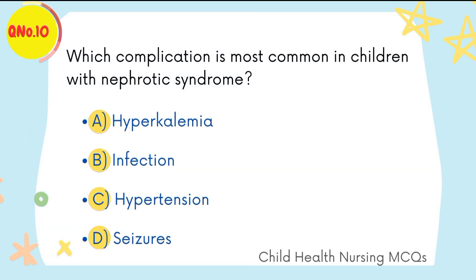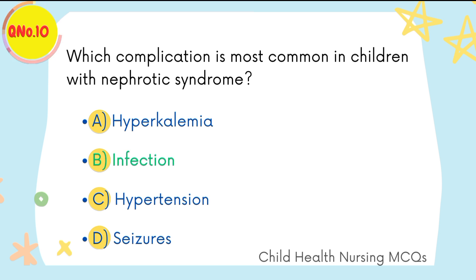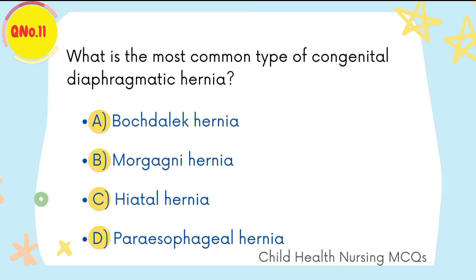Question number ten: which complication is most common in children with nephrotic syndrome? B is the right option: infection. Question number eleven: what is the most common type of congenital diaphragmatic hernia?